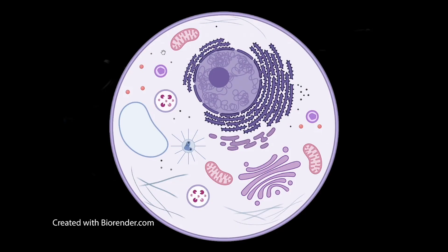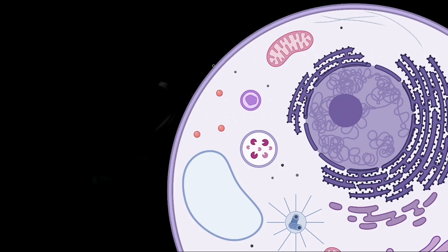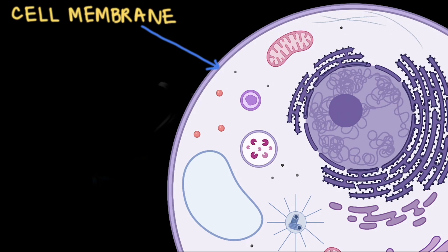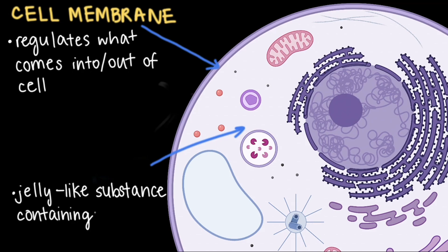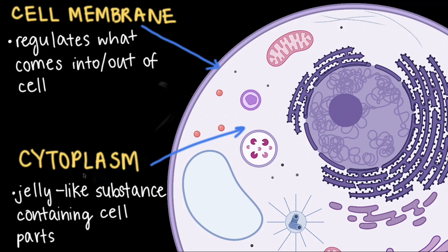Let's explore the parts of a cell starting with a cell's surface. Cells are separated from their outside environment by a cell membrane. You can think of the cell membrane like a fortress gate because it regulates what comes into and out of the cell. Contained within the cell is a jelly-like substance that fills out the cell and contains its internal parts. Unlike chicken soup, the cell parts in the cytoplasm are not just floating around — they're organized and held in place by an internal structural network.